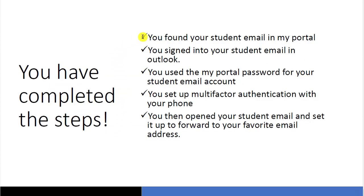You have now completed the steps. You found your student email in your portal, signed into your student email account in Outlook, used the My Portal password for your student email account, set up multi-factor authentication with your phone, and opened your student email and set it up to forward to your favorite email address. That's it for this tutorial — good luck, and I hope you're successful in setting up your email.